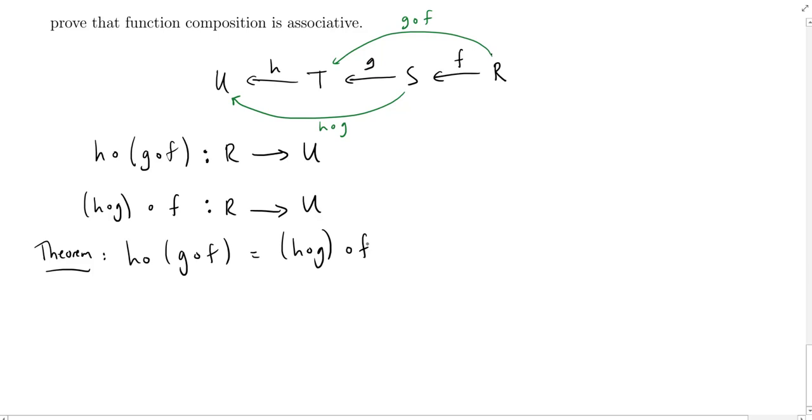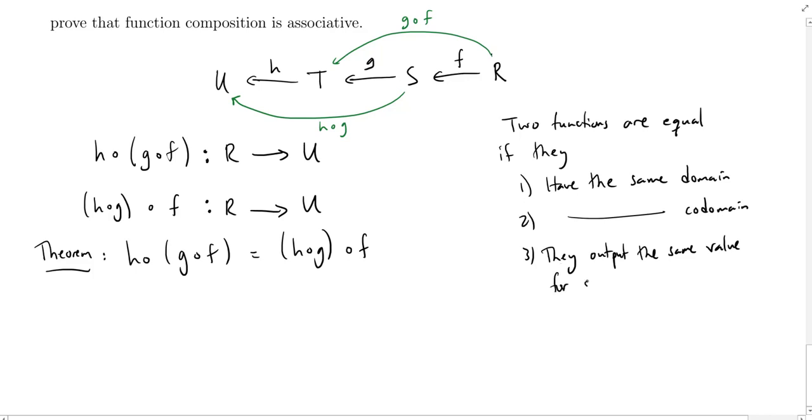So the theorem is that h composed with g composed f is equal to h composed g composed with f. So first question, of course, when you're trying to prove something is what does it mean? We have two functions and the claim is that they're equal. So for two functions to be equal, they: one, have the same domain; two, they have the same codomain; and three, they take on the same values on all elements of the domain. So they output the same value for the same input.